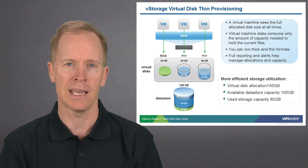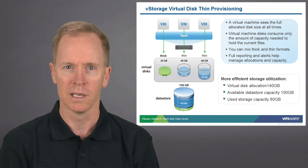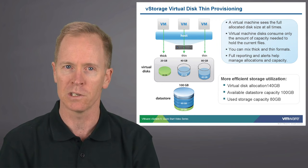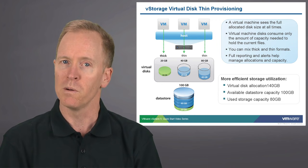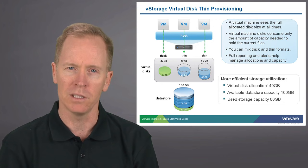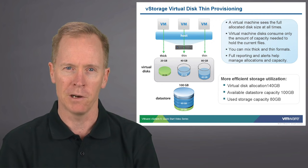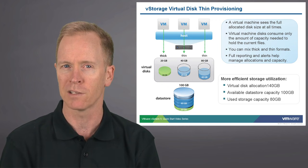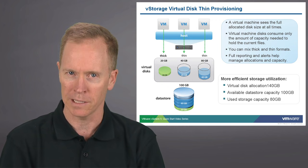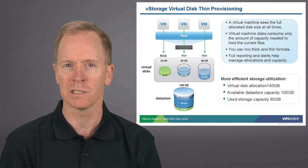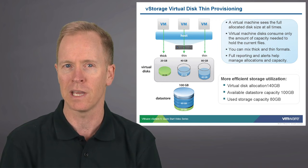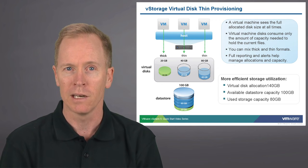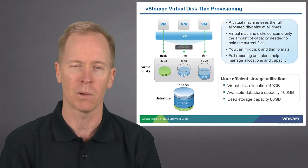The virtual machine in the middle has a thin-provisioned virtual disk. When you create a virtual disk, you have the option to create the disk as a thin-provisioned disk. We're creating a disk that appears to be 40 gigabytes, but the actual amount of data blocks allocated thus far is only 20 gigabytes. With the thin-provisioned virtual disk, we delay the actual allocation of data blocks until it's actually necessary. In other words, we dynamically allocate data blocks on the fly.